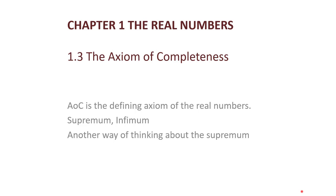Welcome. In this section, we look at the axiom of completeness. This is what makes the real numbers the real numbers — it is the defining axiom of the real numbers. We'll talk about some important ideas, in particular something called the supremum and infimum, and then, because it's so important, we will look at a second way of thinking about the supremum.